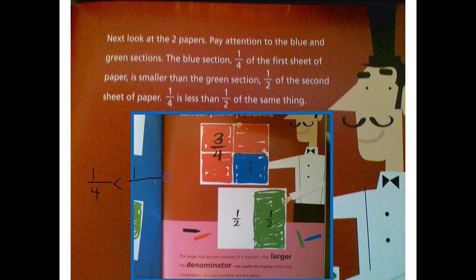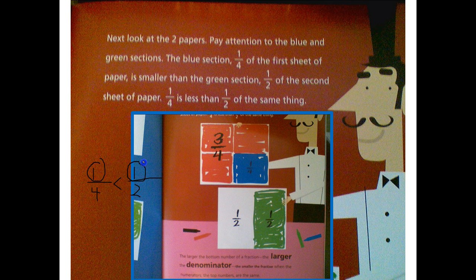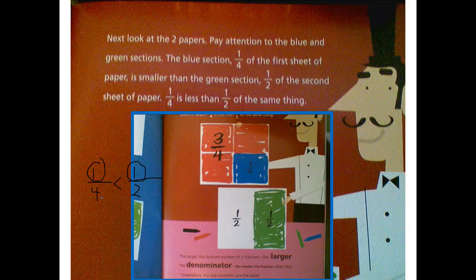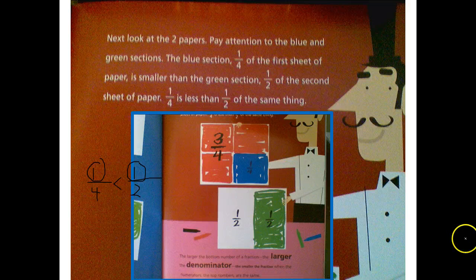You'll notice the denominators aren't the same anymore — we have a four here and a two here, but our numerators are. We're talking about one piece of each. One of something cut into four pieces is going to be smaller than one of the same size whole when it's only cut into two pieces.